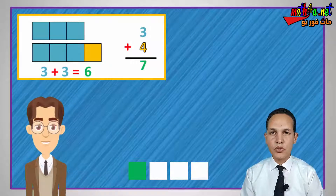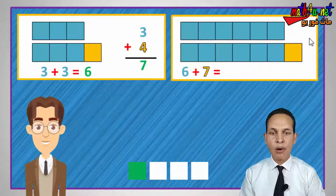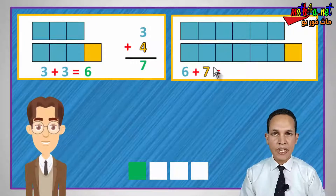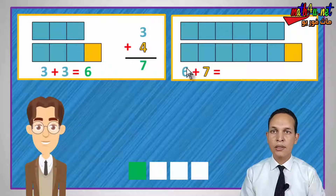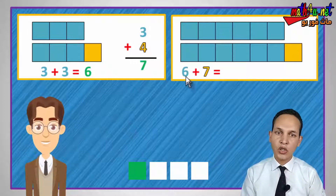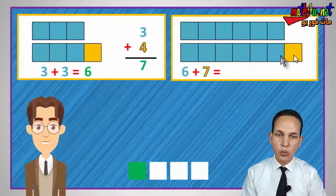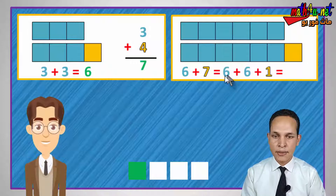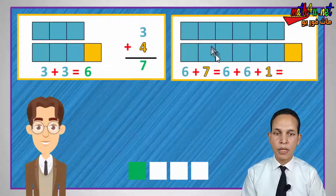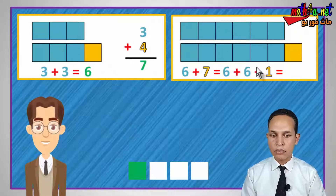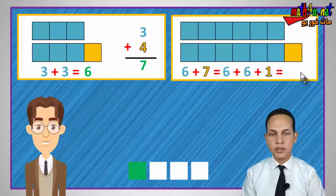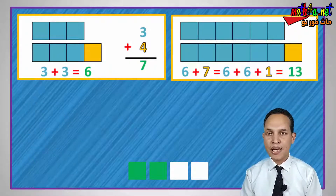Let's try another one. What double can help us solve six plus seven? We have six and seven. The double of six is twelve. So six plus seven: seven is the same as six plus one. Therefore, six plus six equals twelve, and twelve plus one equals thirteen. Six plus seven equals thirteen.